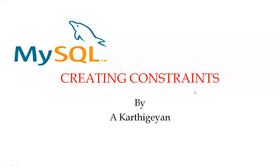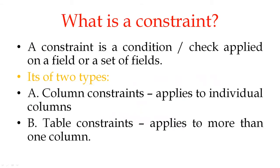Welcome back students. Today's topic is creating constraints — that is, how we create constraints while creating a table. A constraint is a condition or check applied on a particular field or a set of fields. It can be of two types: one is a column constraint and the other is a row constraint.